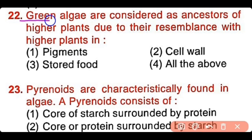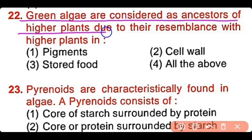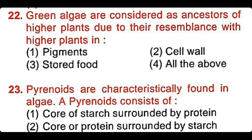Question number 22: Green algae are considered as ancestors of higher plants due to their resemblance with higher plants in pigments, cell wall, stored food, or all of the above? The correct answer is option 4. Green algae and higher plants have similar pigments, the same composition of cell wall, and the same type of stored food.